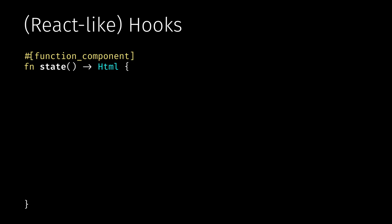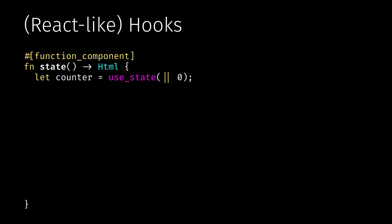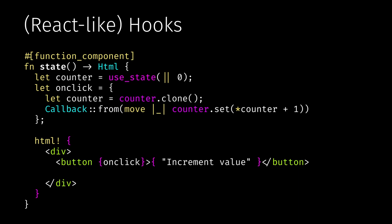In a simple counter example, we initialize our state to zero and create an onClick callback. We need to clone our counter variable, then create the callback type used internally — we just set counter to its value plus one. In the end, we use the HTML macro again, passing this onClick callback to a button. If the callback has the same name as the JavaScript callback name, you can use shorthand syntax with just curly braces around it. We also display the current counter value using a reference.